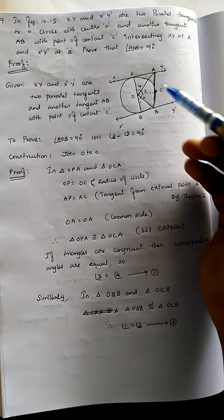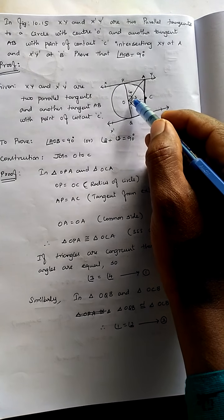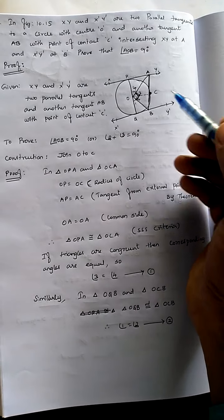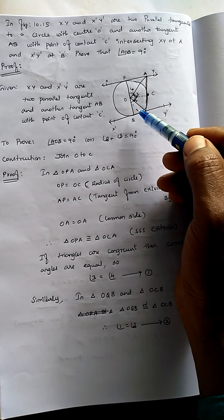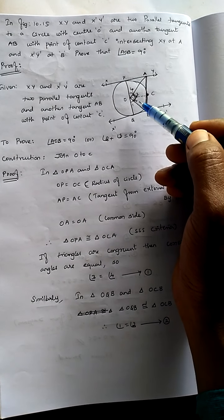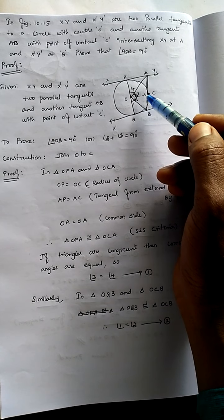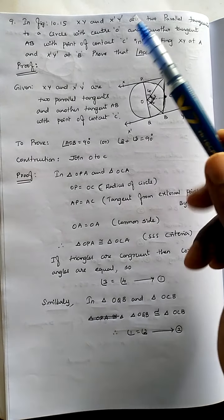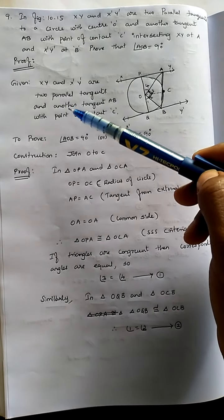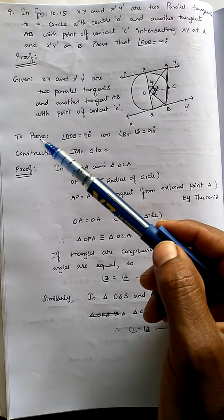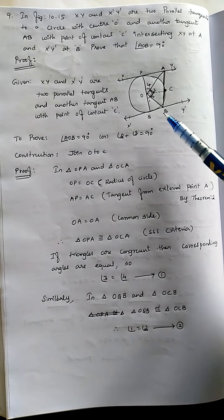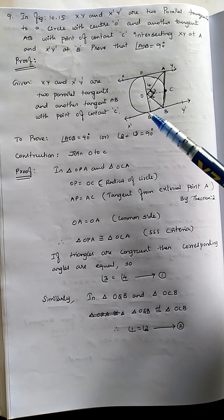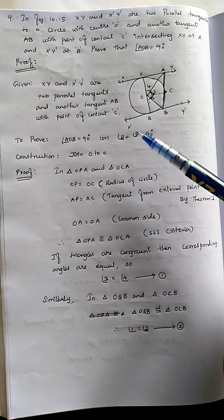We have to prove that angle AOB is equal to 90 degrees. If we give the angles names 1, 2, 3, 4, then angle 2 plus angle 3 equals 90 degrees. This is the given data from the question, and what we have to prove is angle AOB equals 90 degrees.